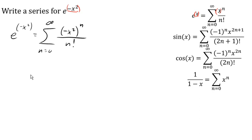And we could stop there if we wanted, or we could go ahead and break this apart a little bit. Break it apart as negative 1 to the n, and x squared to the n we could write as x to the 2n, all over n factorial.